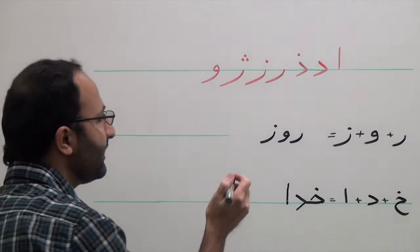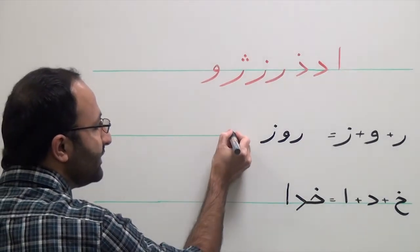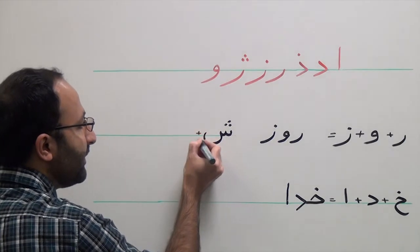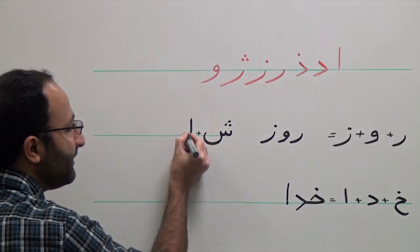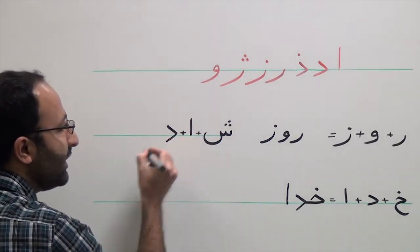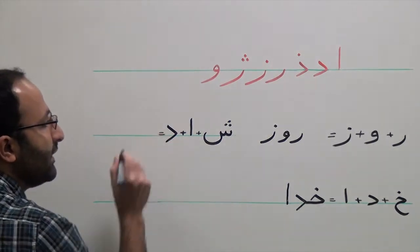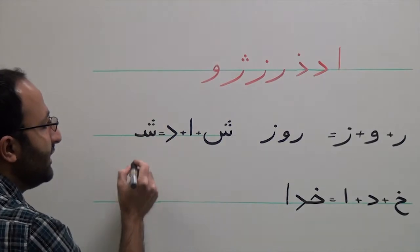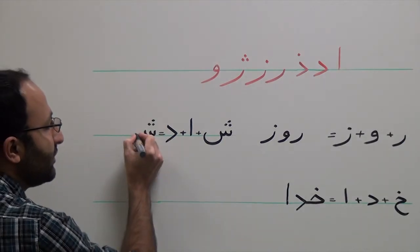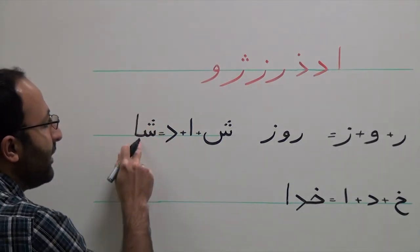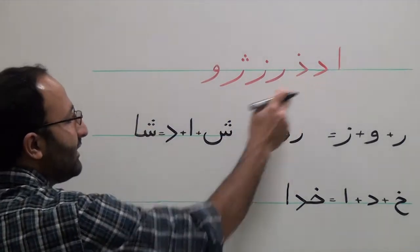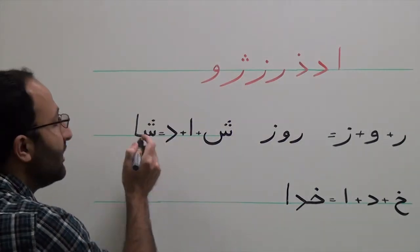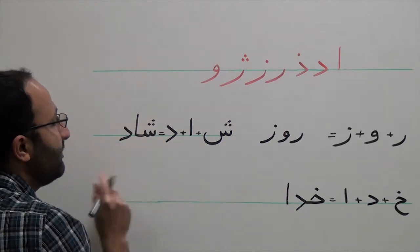Let's look at another example. You have Shin plus Aleph, and you have Dal. So you use the initial form of Shin, then you connect it to Aleph. But because Aleph is one of the characters that cannot be connected to the following character, which is Dal, it is written separately.